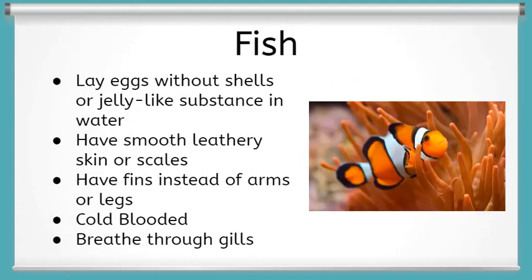Fish are a class of animal that lay eggs in the water. Unlike amphibians, fish eggs don't commonly have a jelly-like substance surrounding them. Also unlike amphibians, fish live in the water for their whole lifespans. Fish have smooth, leathery skin, or more commonly scales. Fish breathe through gills and have fins that propel them through the water instead of arms or legs. However, not all animals with fins are fish — dolphins and whales, which give birth to their young and are warm-blooded, are not fish but mammals.